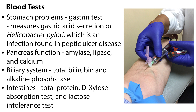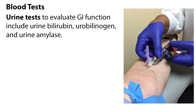Total bilirubin and alkaline phosphatase evaluate the biliary system. The function of the intestine can be evaluated with total protein, D-Xylose absorption test, and lactose intolerance test. Urine tests to evaluate GI function include urine bilirubin, urobilinogen, and urine amylase.